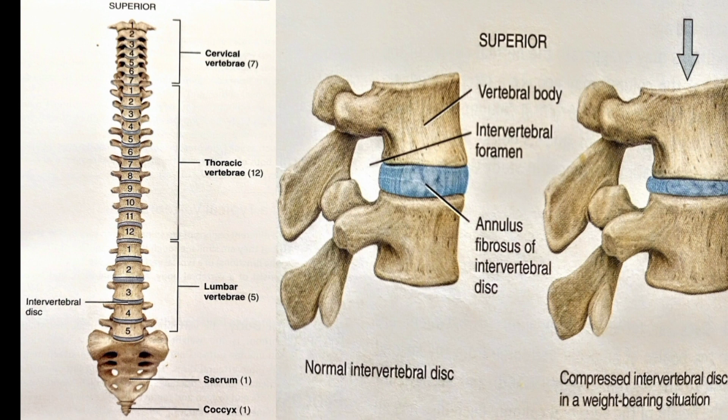This is the structure of the intervertebral disc. This is the annulus fibrosus — the ring-like outer layer. This is the nucleus pulposus. The nucleus pulposus is the central part of the intervertebral disc.